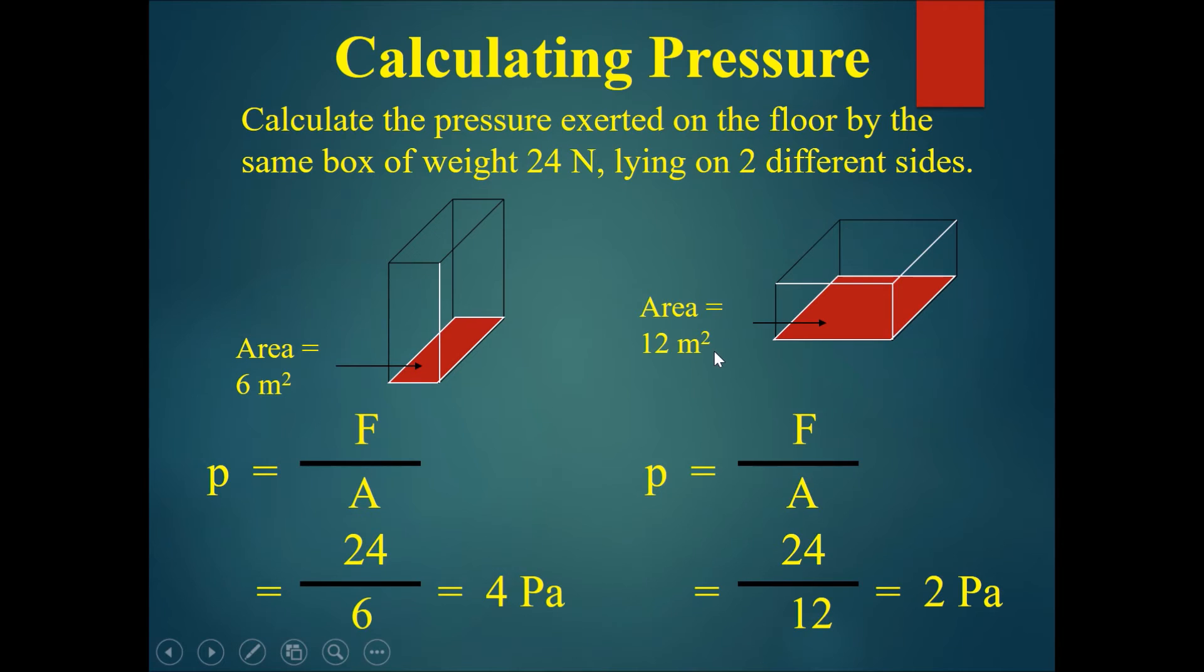However, if the box is on its side, the base area that touches the ground is 12 meters squared, and therefore the pressure will be force 24 newtons once more divided by the area of 12, and the pressure becomes 2 pascals. The same block can provide two different pressures depending on what side it lies on.